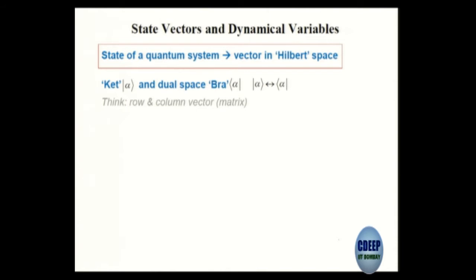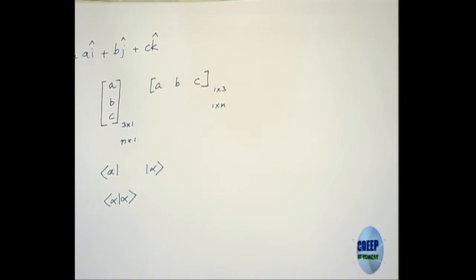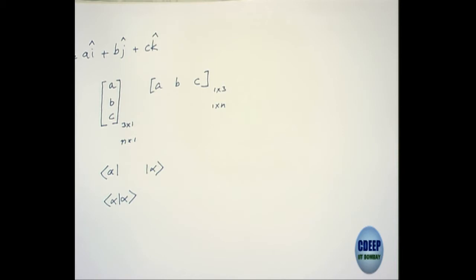That is a matter of convention. The way we usually work: the ket will be the column vector and the bra will be the row vector. Now, these vectors I had — if this is a position vector and I have a, b, c somewhere, then the square root of a squared plus b squared plus c squared is the length of the vector. My question is: is that always true any time I write three numbers in an n by 1 matrix like this?